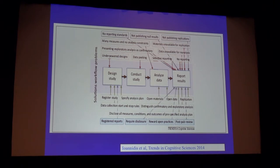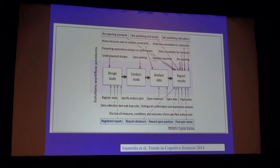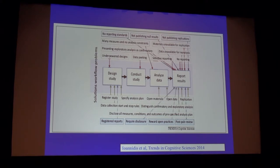Solutions can be thought of at several steps in the scientific investigation process — at the level of designing, conducting, analyzing, and reporting studies. It probably makes sense that if we act in a preemptive way earlier on, it will be easier. We all know that if we have a horrible study that has been very poorly designed or poorly run, we're stuck with data we don't know what to do with.